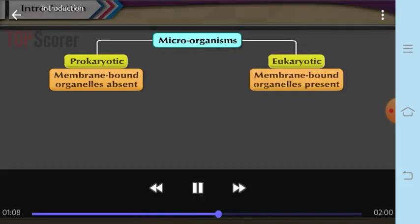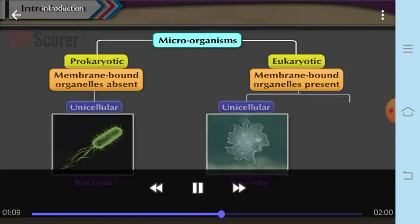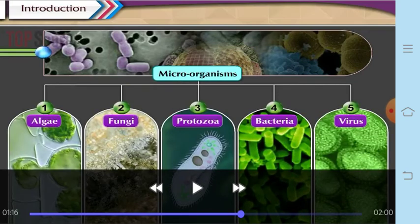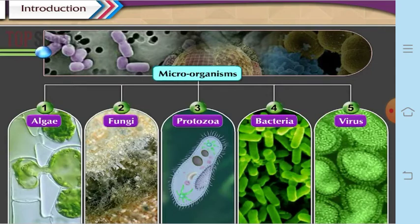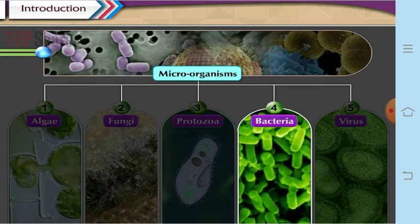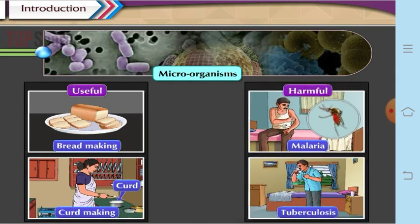These microorganisms are of various types. As you have learned earlier, microorganisms can be divided into two categories: prokaryotic and eukaryotic. Prokaryotic may be unicellular, and some eukaryotic are unicellular as well as multicellular. Some of the microorganisms you are aware of are algae, fungi, protozoa, bacteria, and the smallest ones are viruses. All these microorganisms are found everywhere — some of them are useful and some are harmful.